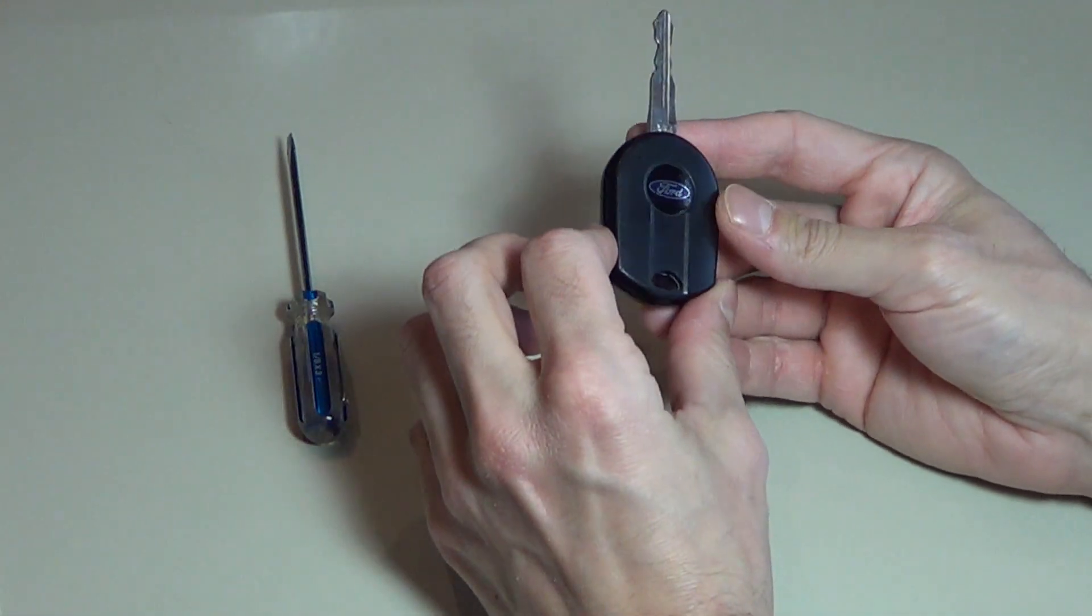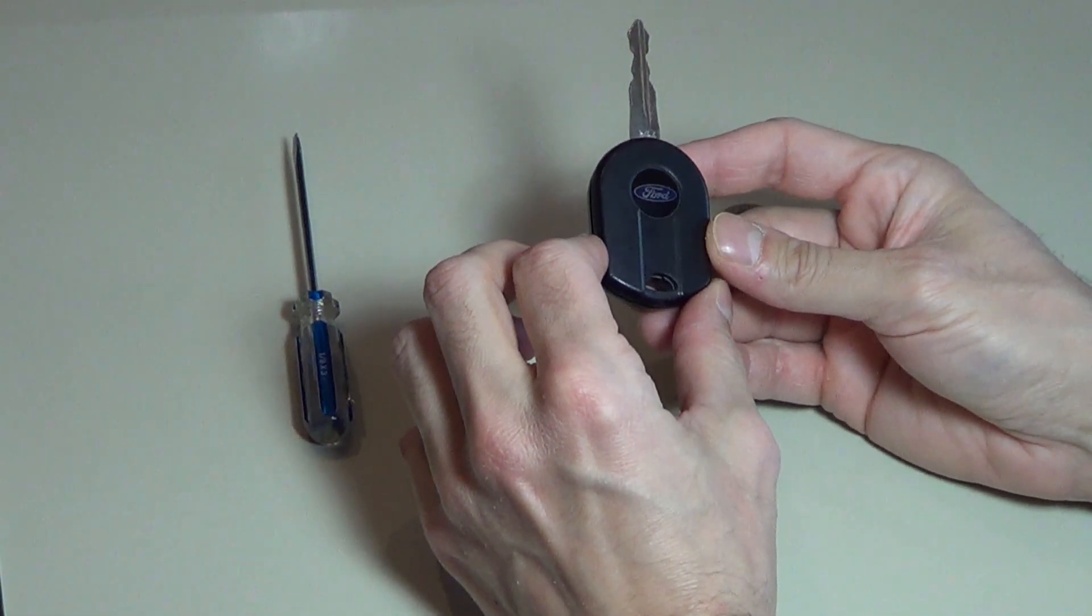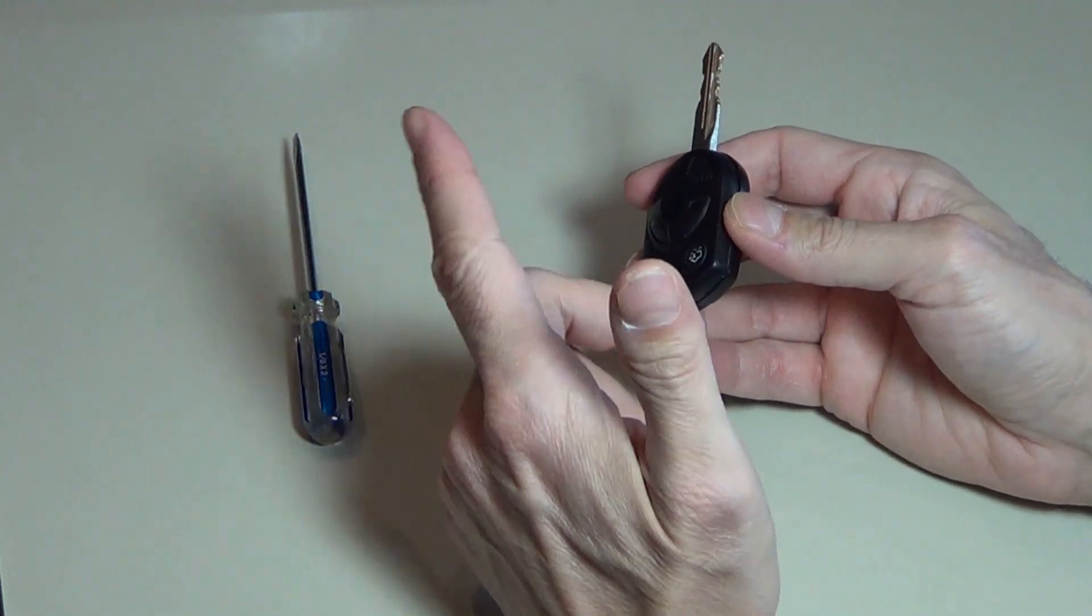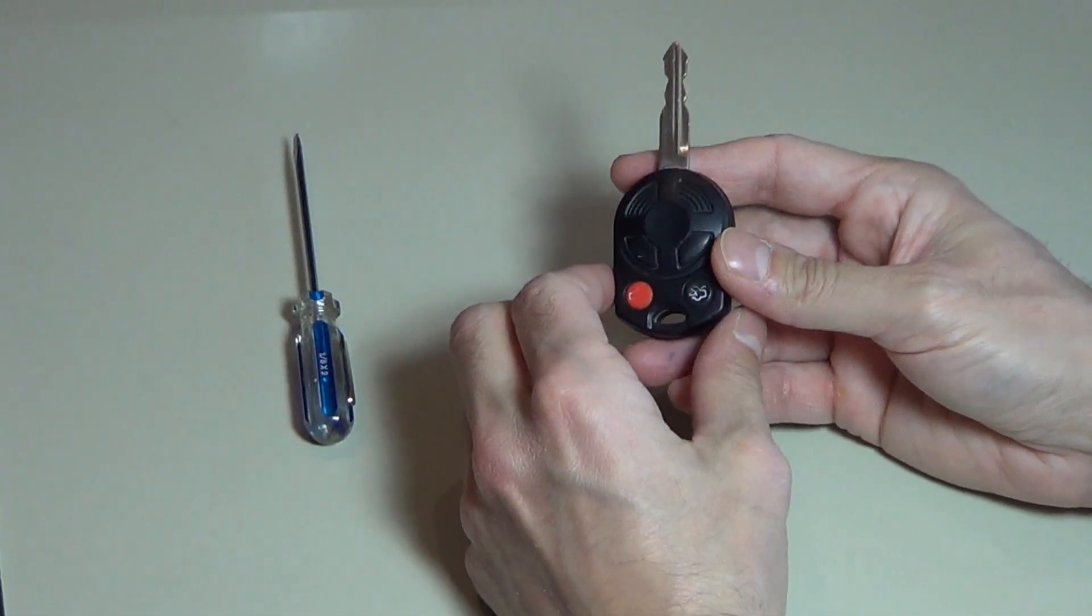The key fob is the one used on Ford Fusions from 2010 to 2012 and is common in other Fords like the Focus, the Taurus, and their trucks like the Expedition and Transit.